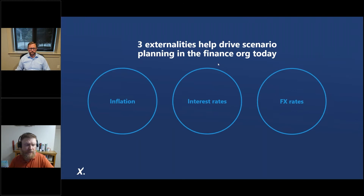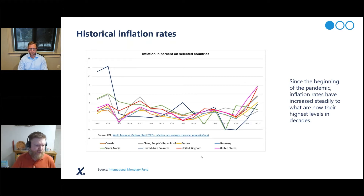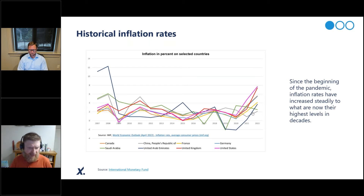Let's talk specifically about inflation and look at a historic trend. This chart covers a couple of countries across Asia, Europe, and North America. For the most part, inflation has been relatively stable for the last roughly 13 years — you see a slight deflation dip toward the beginning of the pandemic — but then all of a sudden, a hockey stick. Every single country here with one exception has had a pretty sharp increase. That's the environment we're in today.